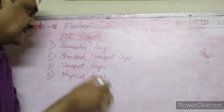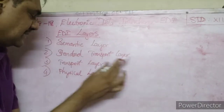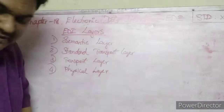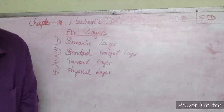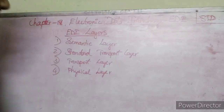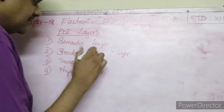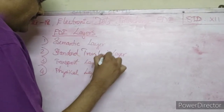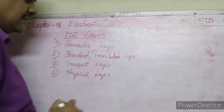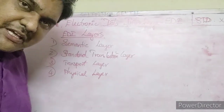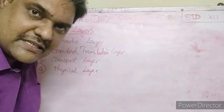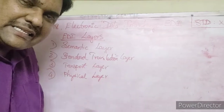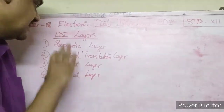There are four layers: the Semantic Layer, the Standard Translation Layer, the Transport Layer, and the Physical Layer. A protocol is a set of rules and regulations that has to be followed while sending a business document, and these four layers govern that process.